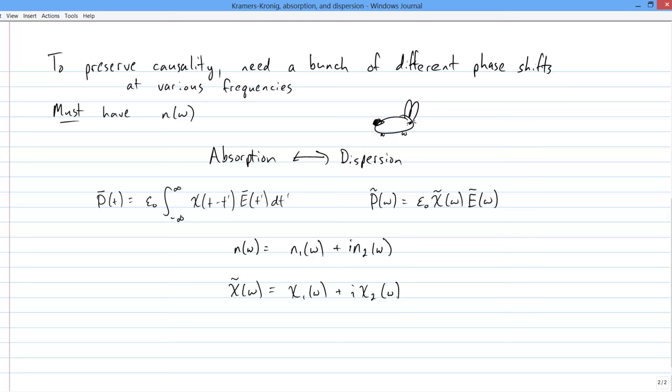And here's where things get fun. Some people who are very good at complex analysis proved that if you have a response function that's causal, which is to say it only worries about things that have actually happened so far, then the Fourier transform of that function, the frequency domain response function, must be analytic.